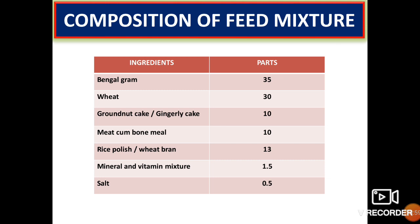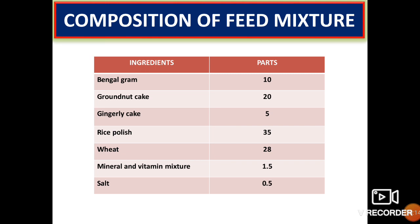Here is the composition of feed mixture. The ingredients include Bengal gram, wheat, groundnut cake or gingelly cake, meat cum bone meal, rice polish, wheat bran, mineral and vitamin mixture and salt. Another feed mixture composition includes Bengal gram, groundnut cake, gingelly cake, rice polish, wheat, mineral and vitamin mixture and salt.